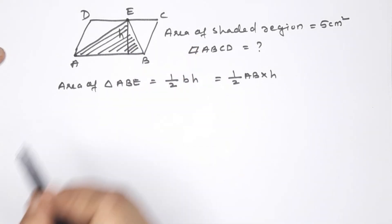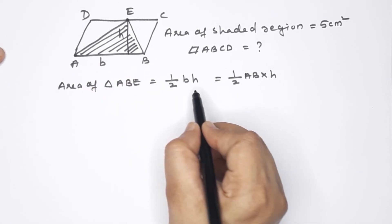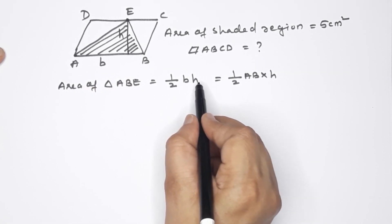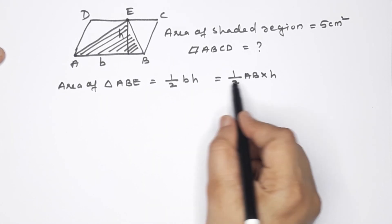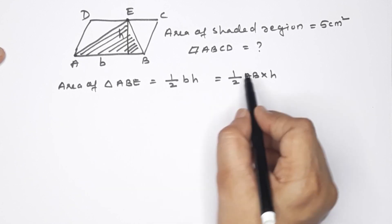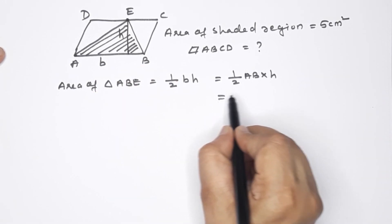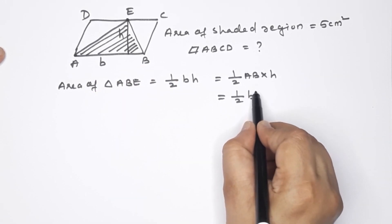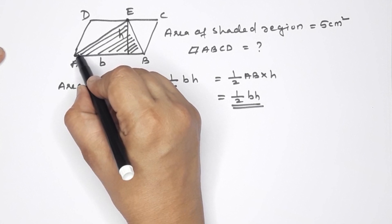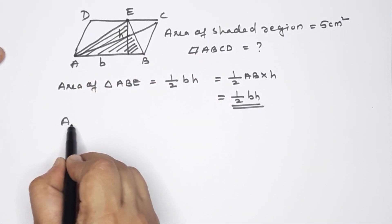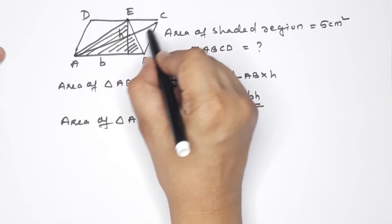Okay. Here is the length. Then AB is here. I will add the formula using half base into height, same as half base into height. I will denote base as B and height as H. I will add half base into height. Here is the formula: base into height. This is how I join this. Then I will add the area of triangle ABE, and triangle ABC.